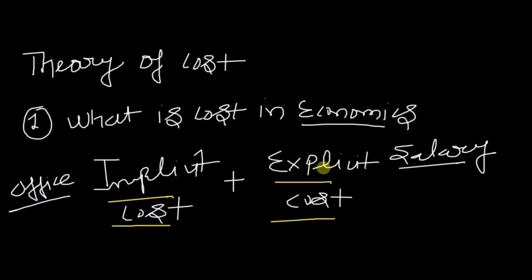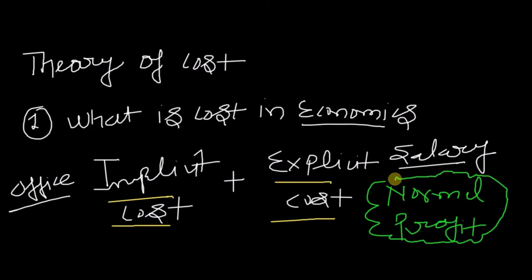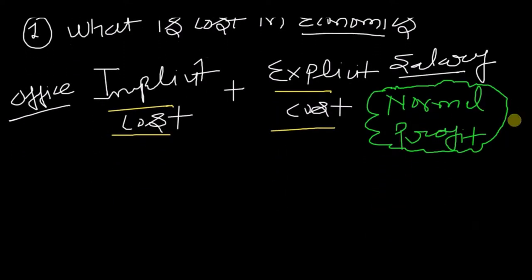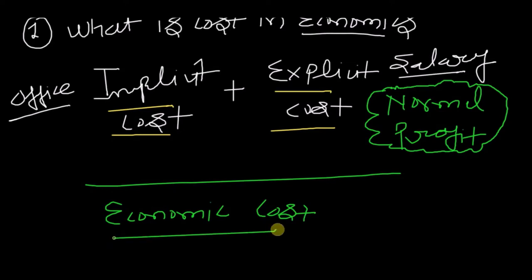The third aspect of cost in economics is a very important concept: normal profit. Normal profit is the bare minimum profit that an entrepreneur would look for in order to continue a business — it is the minimum required to carry on. In economics, implicit cost, explicit cost, and normal profit together constitute the economic cost.